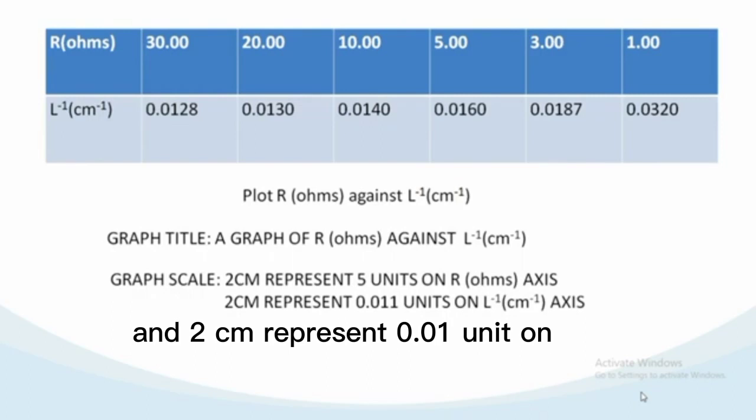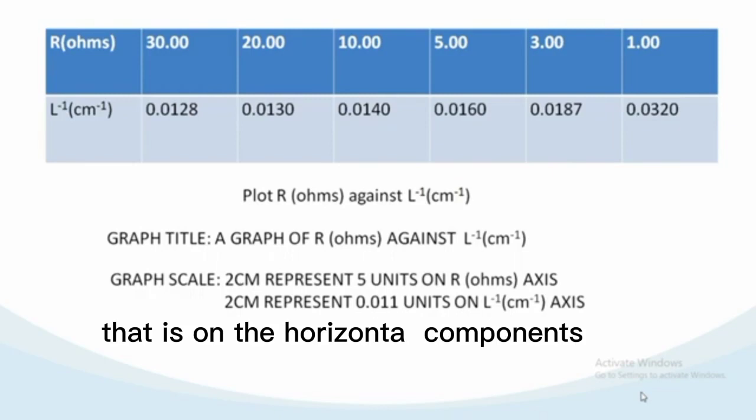On the horizontal component we have 0.011, 0.012, 0.013, 0.014. That's how you lay your scale. Let's look at the third table.